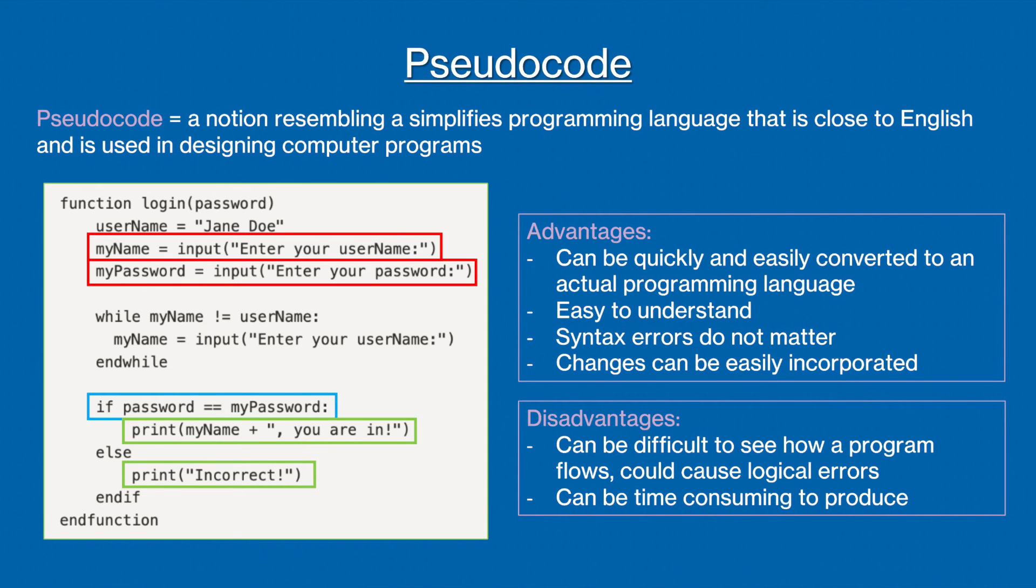The inputs in this program are the myName variable and the myPassword variable, as the program is taking this information in from the user. The outputs are the green boxes, as we are printing the information in the brackets to the terminal. Lastly, the blue box shows one possible process, as it contains an if statement, so a decision is being made here.